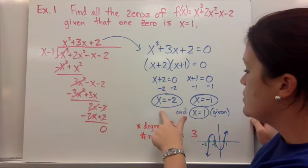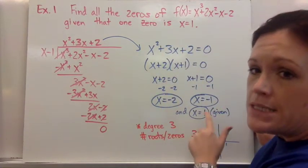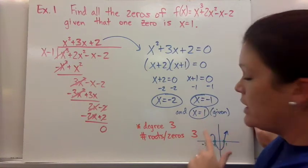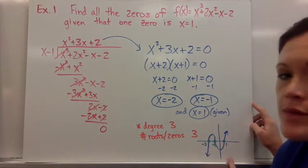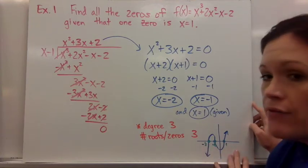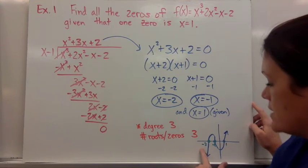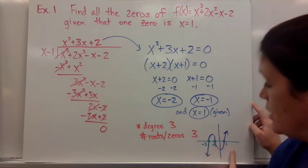x was equal to -2, x is equal to -1, and we were given x = 1. So don't forget the one that you were given. And I drew a graph, because I want you to know that those roots go directly onto the graph. They're all real roots, none of them are complex. So they would be your x-intercepts: -2, -1, and 1.